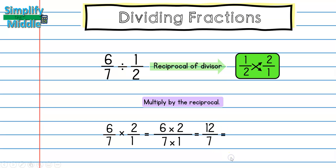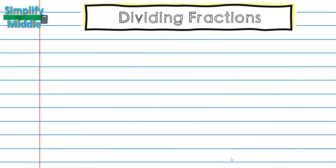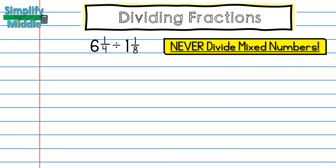When I write 12/7 as a mixed number, I have one group of 7 inside 12 with five left over, so 1 and 5/7 is my answer. Now let's look at some problems with mixed numbers. Here I have 6 and 1/4 divided by 1 and 1/8. It's important to note that you will never divide — or multiply — mixed numbers directly, so whenever I see a mixed number I need to change it to an improper fraction first.